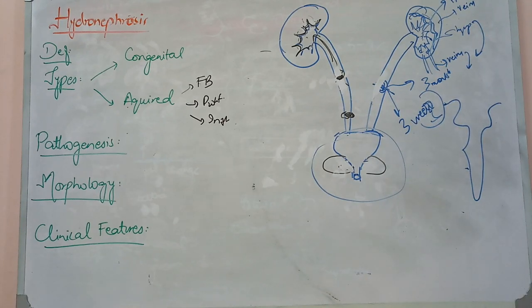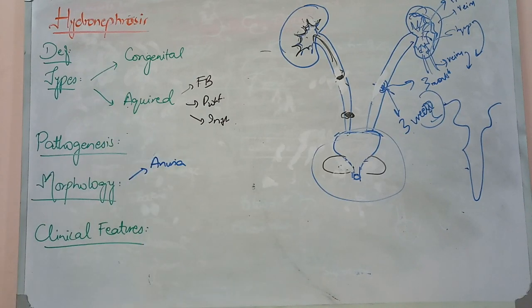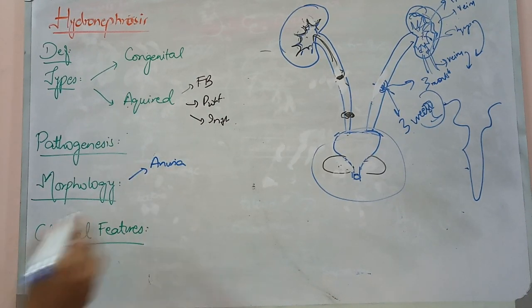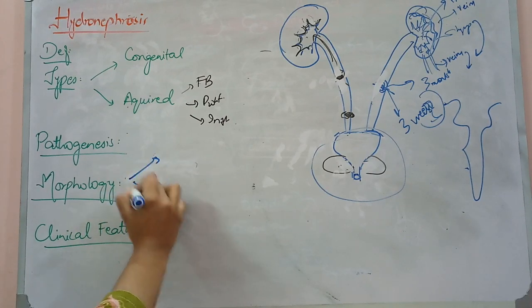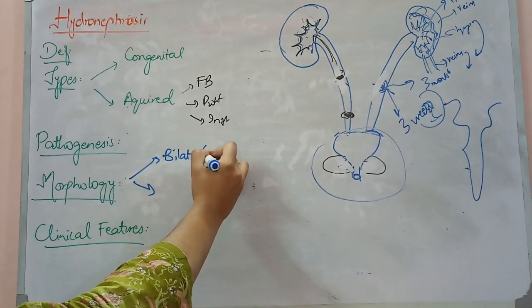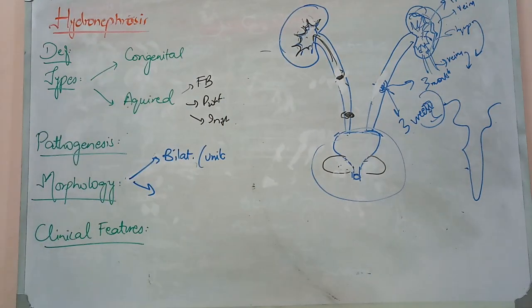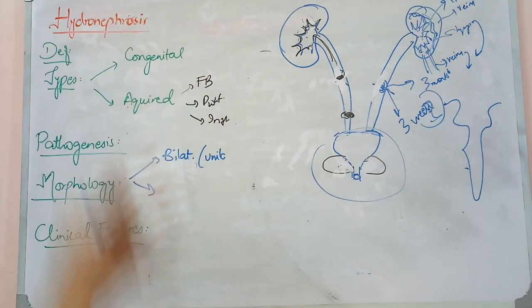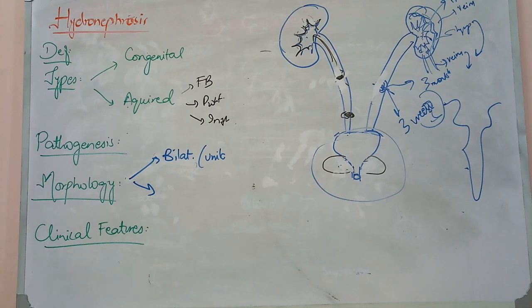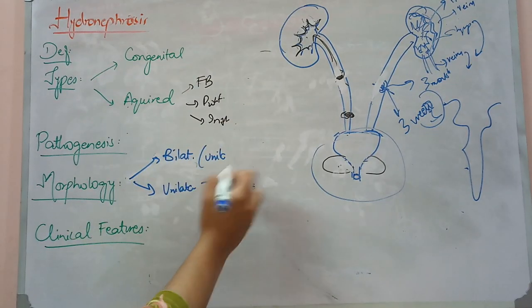Now we will see what the morphological features are. If there is a complete obstruction, there will be no urine production and the patient will have anuria. In terms of bilateral and unilateral conditions: if bilateral hydronephrosis develops in both kidneys, the patient will reach renal failure, which is an emergency condition. If there is unilateral hydronephrosis, the other kidney may compensate.